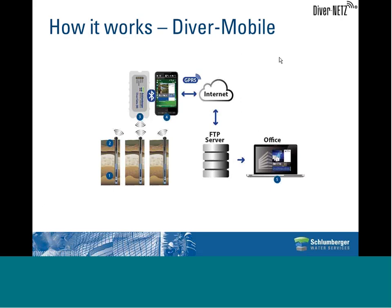There are two setups. One is with a mobile device like a Windows smartphone or with a pocket PC. In the field you have your diver installed in the well, and you have a cable running up to the DiverDXT that's on top of the well. The DiverDXT is a repeater or transmitter of the data to the DiverGate, which is something you carry with you.